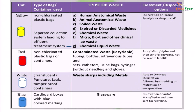The red bag uses a non-chlorinated plastic bag or container to collect contaminated waste which is recyclable — glass tubings, bottles, IV tubes and sets, catheters, urine bags, syringes, and gloves used in the hospital. These need to be autoclaved, microwaved, or hydroclaved and then sent to recycling.